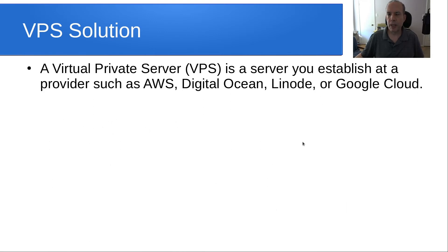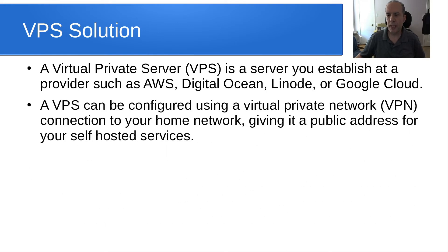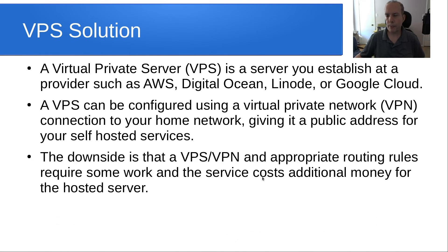What about the VPS solution? A virtual private server is a server that you establish at a service provider like Amazon Web Services, DigitalOcean, Linode, or Google Cloud. A VPS can be configured using a virtual private network, VPN, connection to your home network, giving it a public address for your self-hosted services. The downside is that a VPS and VPN combination with appropriate routing rules require some work and the service costs additional money for the hosted server.